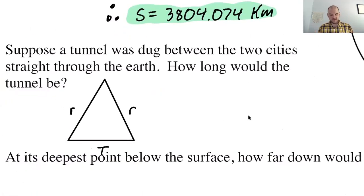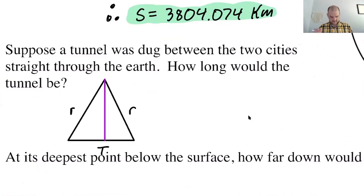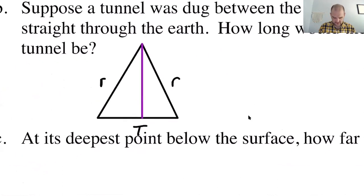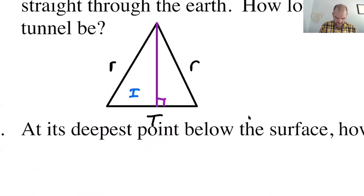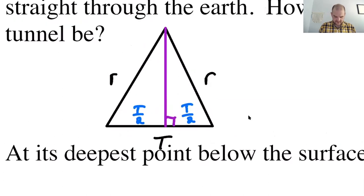Since it's an isosceles triangle, if we drop the altitude from the vertex angle, it bisects the base — so each half is T over 2. It also bisects the vertex angle, so each half-angle is theta over 2. I'll redraw it more clearly to work with it.